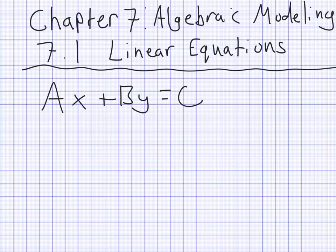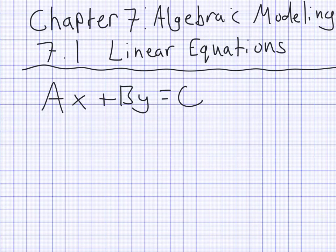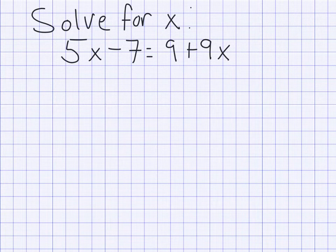For example, we have ax plus by equals c, which is sometimes called the standard form of a linear equation. Notice you just have regular x and y, and a, b, and c are just standing for generic numbers — we don't know what they are, but they're some fixed numbers.